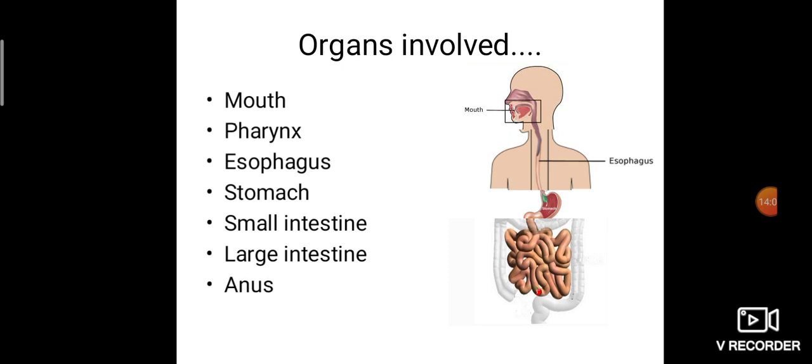At last the digestive system ends with the anus. So the organs involved are: mouth, pharynx, esophagus, stomach, small intestine, large intestine, and anus. Try to get familiar with these names before studying the mechanism in detail.